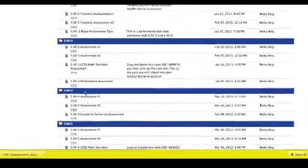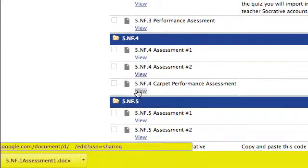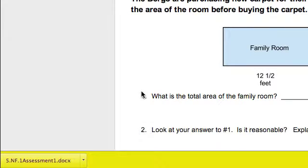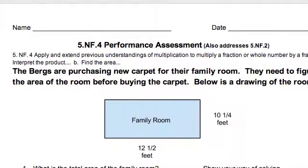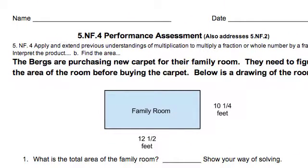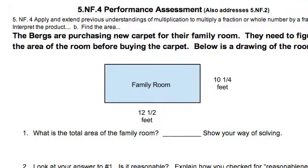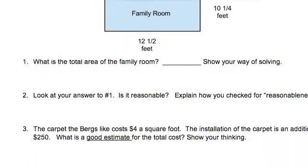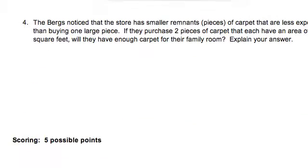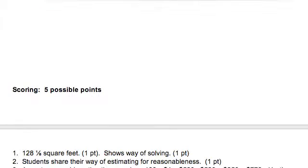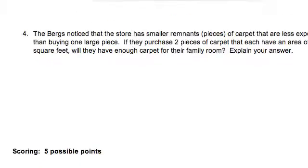So you'll also notice that some of these assessments are listed as performance assessments. So let's take a look at 5-NF4. So this particular performance assessment, you'll notice, addresses 5-NF4 and NF2, and it gives a situation relating to carpeting a family room. And here you can kind of see what that looks like. And then you can also see how you would go about scoring that. Gives you the answer key and some information on scoring.